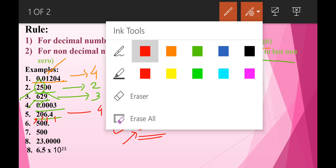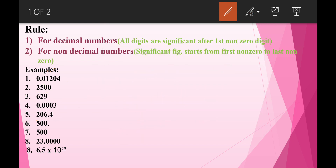Let's look at another example: 23.0000. What is the significant figure for this number? It is a decimal number, so after the first nonzero digit all digits are significant: 2, 3, 0, 0, 0, 0 — that gives us 6 significant figures.